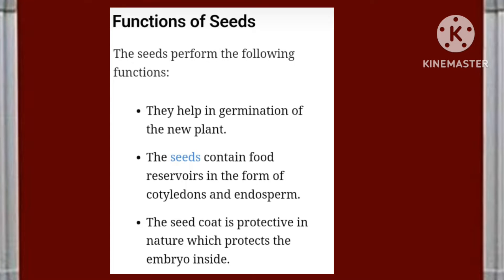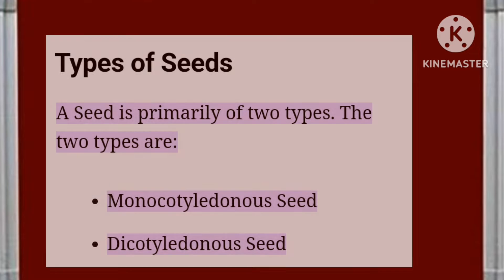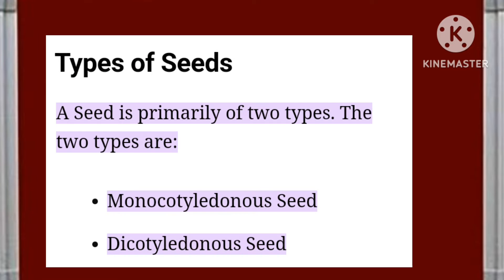There are generally two types of seeds: monocotyledonous seed, or monocot seed, and dicotyledonous seed, or dicot seed. Monocot seeds have one cotyledon and dicot seeds have two cotyledons.